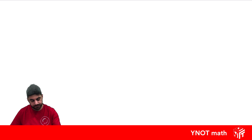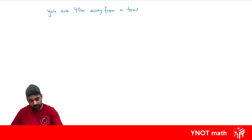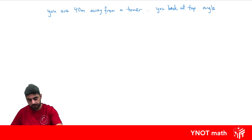Let's have a look at an example. Let's say you are 40 meters away from a tower, and you look at the top with an angle of elevation of 38 degrees. What is the height of the tower?